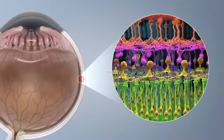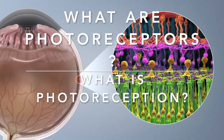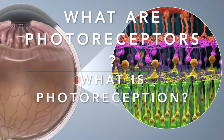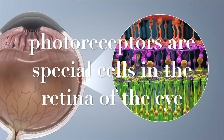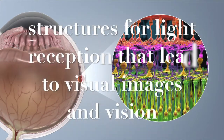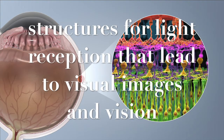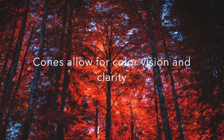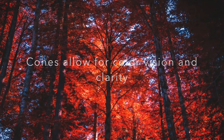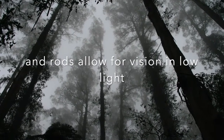Where do you think humans fit in on that, scientist? Do you think that we have simple eyes or do you think our eyes are complex? Photoreceptors are specialized cells that are in the back of the retina of the eye, and they are structures that receive light and create visual images and lead to vision. Rods and cones are both photoreceptors. Cones are the structure that allow for color vision and clarity of images, and rods allow for vision in low light.